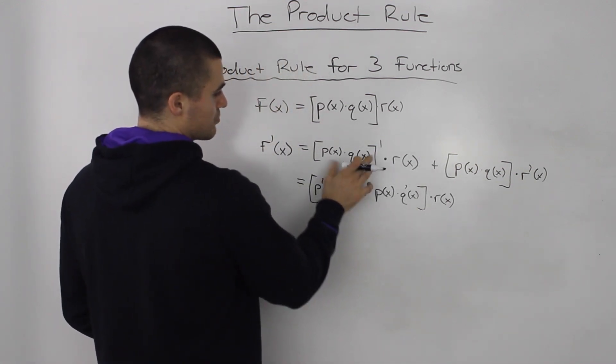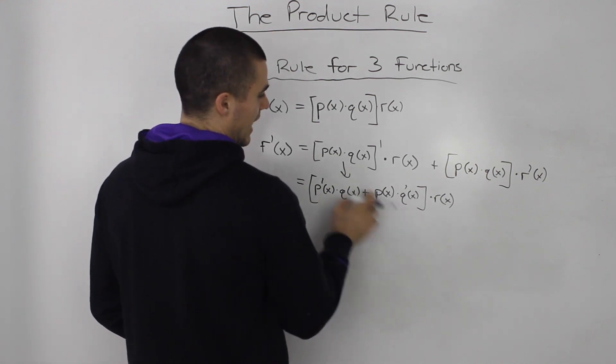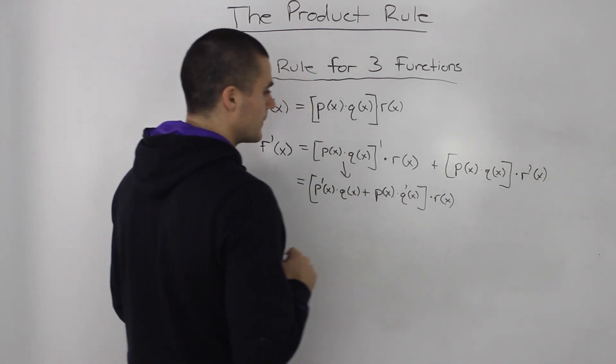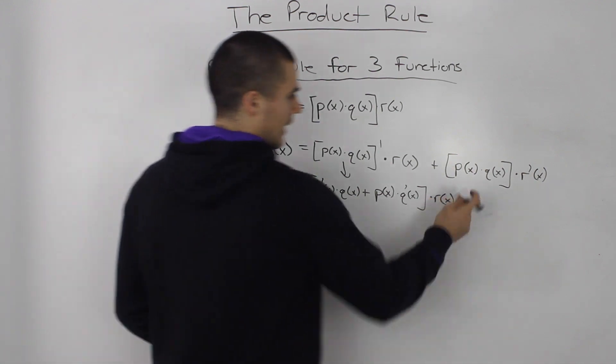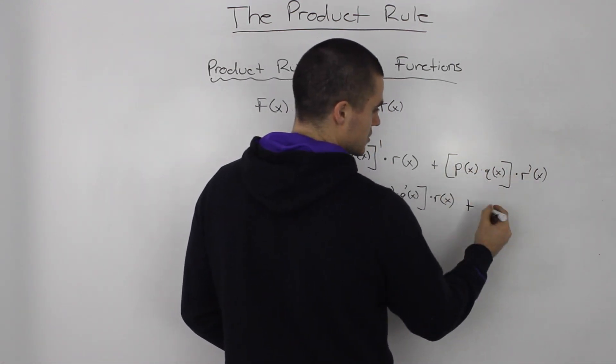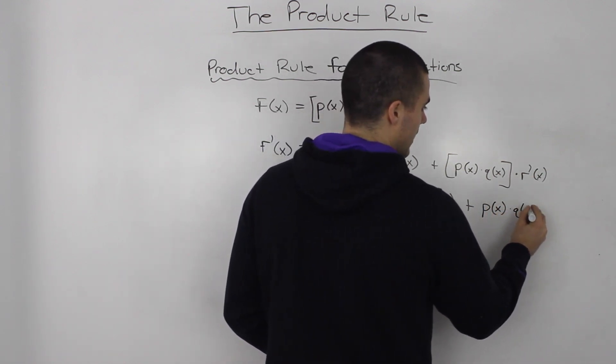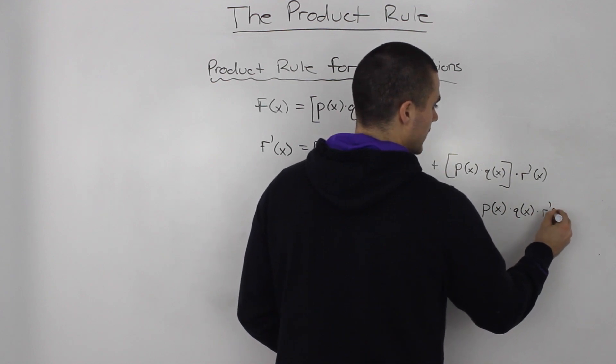So the derivative of this bracket, since we have to take the derivative of it, is just equal to that. And that's just the product rule that we went over in the video before. And then, the second part here, let's just multiply these out. So we'll have p(x) times q(x) times r prime of x.